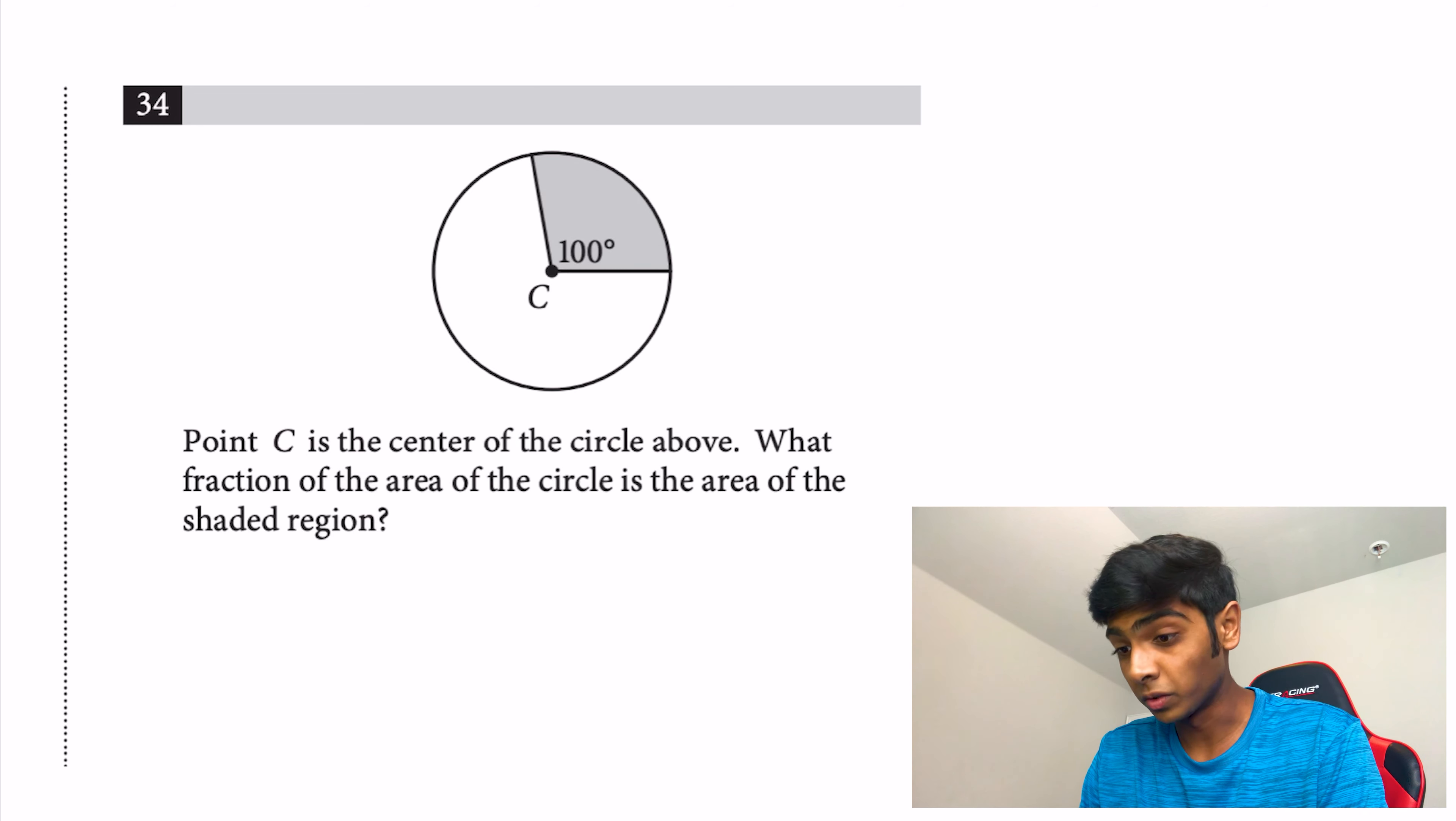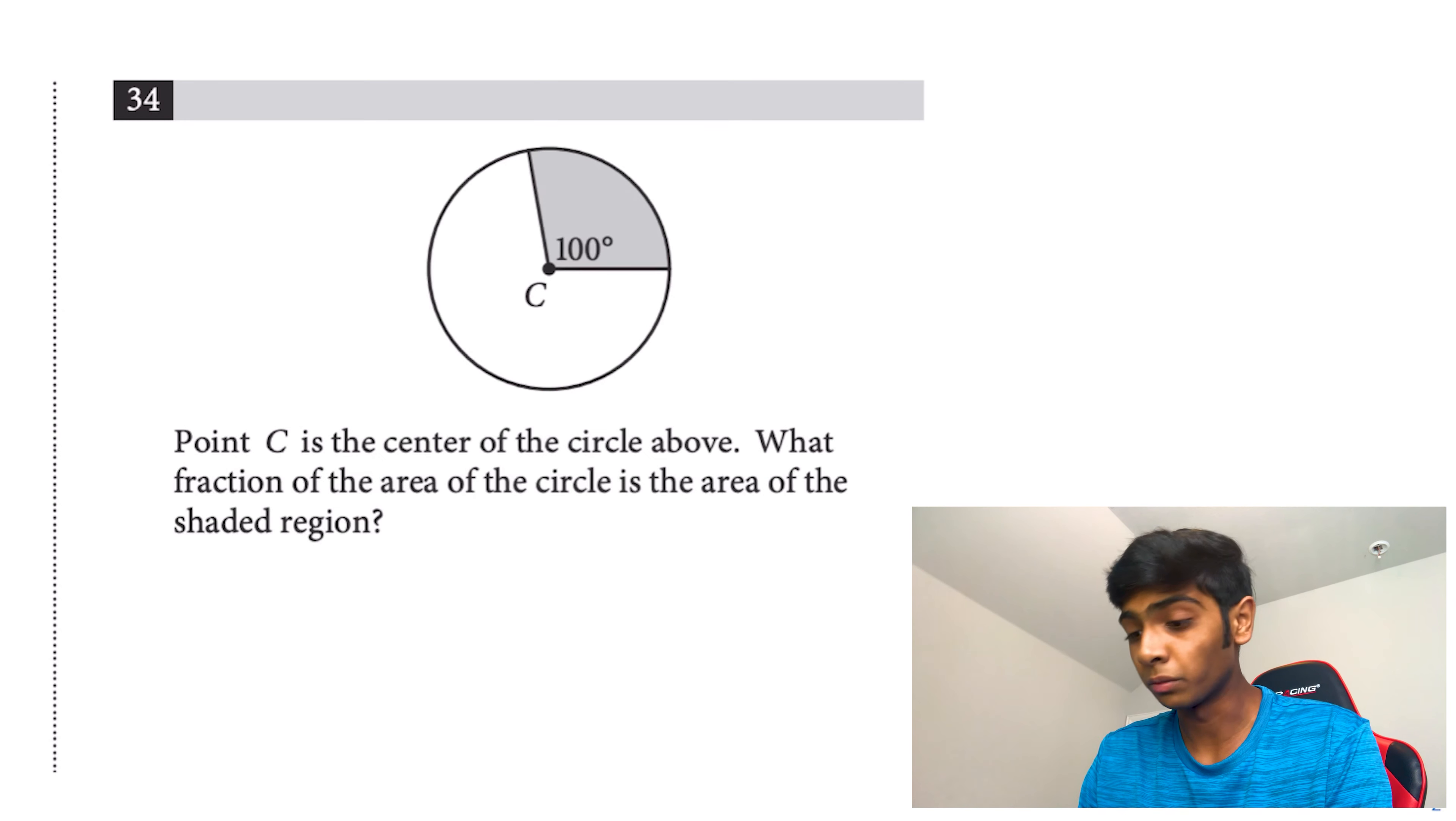Now let's go on to number 34. Point C is the center of the circle above. What fraction of the area of the circle is the area of the shaded region? For a lot of these circle questions, it's just a matter of setting up ratios.